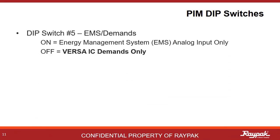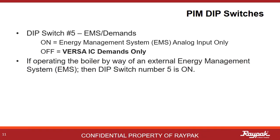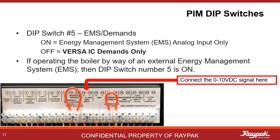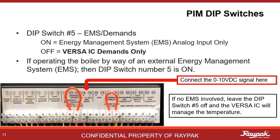PIM dip switch number five needs to be on to engage dip switches number two and number six, as they all support energy management systems. When driving the boiler from an external controller like an energy management system, also known as a building management system, turn on dip switch number five. The EMS will connect to ports 13 and 14 on the low voltage panel. If not driving from an EMS, leave dip switch number five off and the Versa system will drive the boiler.